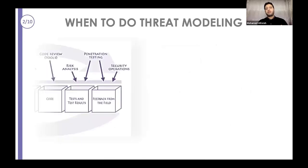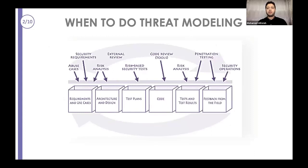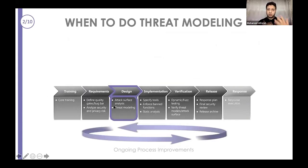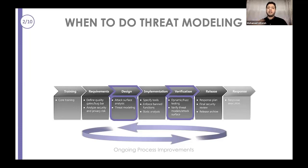The next tip is about when to do application threat modeling. A number of frameworks — such as CGDEL touchpoint and Microsoft SDL — talk about performing threat modeling during the design or architecture phase. You identify all possible threats, and then in the verification or testing phase you ensure the recommended controls have been implemented. This is the standard approach: identify threats, then verify implementation of controls.